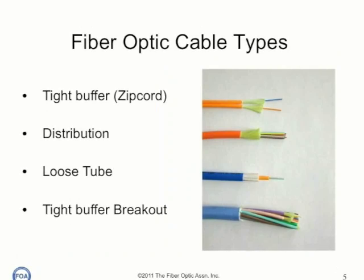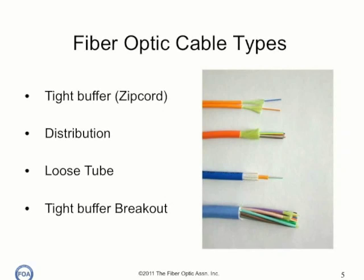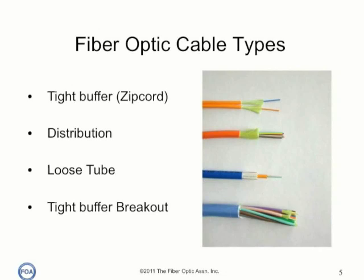Because of the wide variety of conditions to which they are exposed, optical fibers have to be encased in several layers of protection. The first of these layers is the primary buffer coating, a thin protective coating made of UV curable acrylate, a plastic, which is applied to the glass fiber as it is being manufactured. This thin coating provides moisture and mechanical protection.